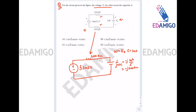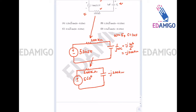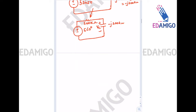Now let's convert the circuit into phasors. Since the source is 5sin(5t), it is written as 5∠0°. The resistance is 200 kilo-ohms and the capacitor has impedance -j200 kilo-ohms. By the voltage division rule, Vc equals 5∠0° multiplied by (-j200 kΩ) divided by (200 kΩ + (-j200 kΩ)).